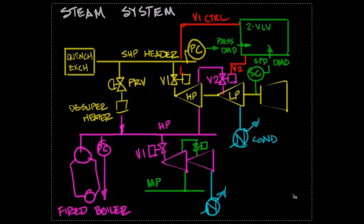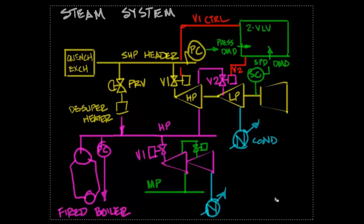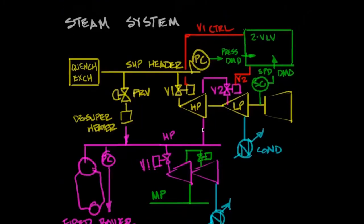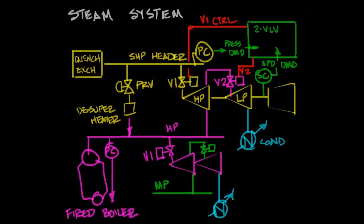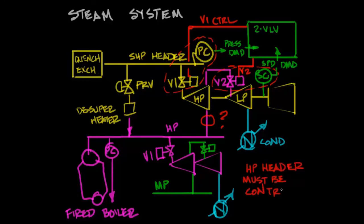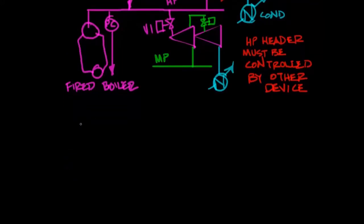Let's look at that steam system again one more time. What we're saying then is the pressure controller that's managing the SHP header pressure is going to manage V1 and the speed controller is going to manage V2. So what does that leave for the header pressure, the extraction pressure or any control of that.